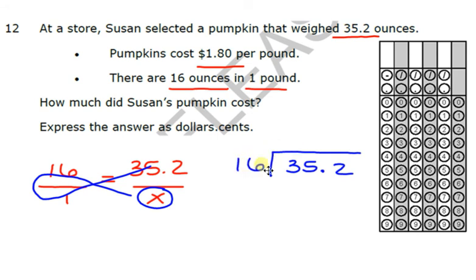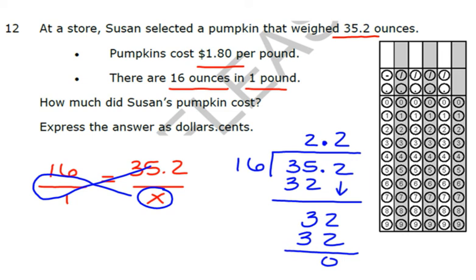Now how many times does 16 go into three? Zero. How many times does 16 go into 35? Two. And it's going to give me 32. All right, 35 minus 32 is 3. Oh, I forgot to bring my decimal to the roof, sorry. And bring down the 2. How many times does 16 go into 32? Two. And it goes in perfectly evenly, okay?